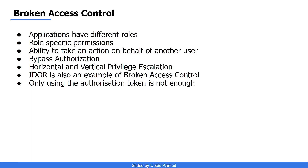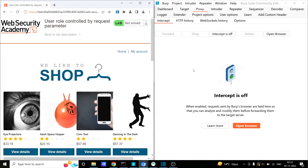So we can say that if a user is able to perform or take action on behalf of another user at the same level or having the same level of privileges, then it is called horizontal privilege escalation. And if they are able to perform or take action on behalf of another user who has higher privileges, then it is called vertical privilege escalation. Irrespective of whether it's horizontal or vertical, both are examples of broken access control. Let's see a basic example of this vulnerability.